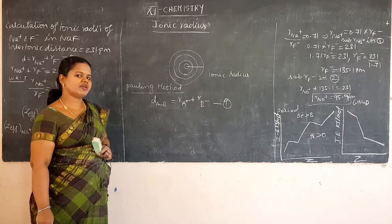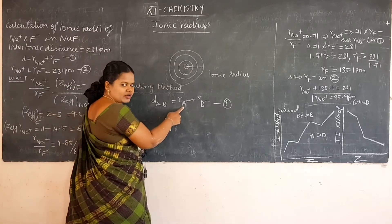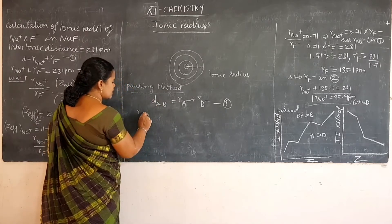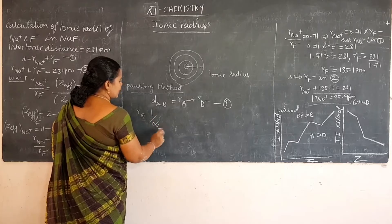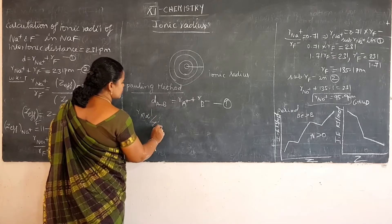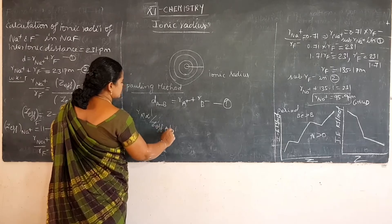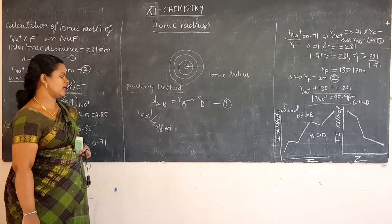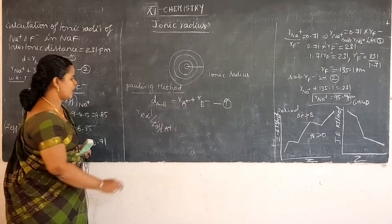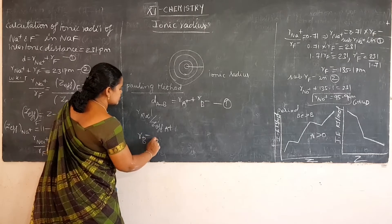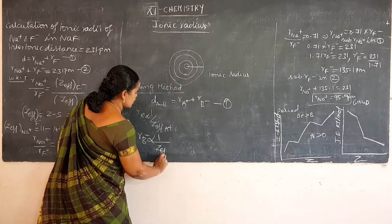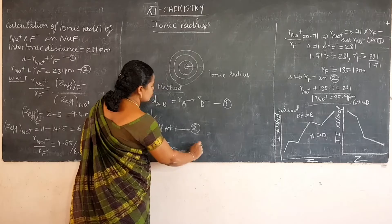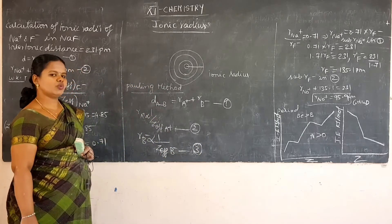He also considered that the ionic radius r_A+ is inversely proportional to the effective nuclear charge of A+. And r_B- is inversely proportional to the effective nuclear charge of the anion B-. Consider these as equations 2 and 3.